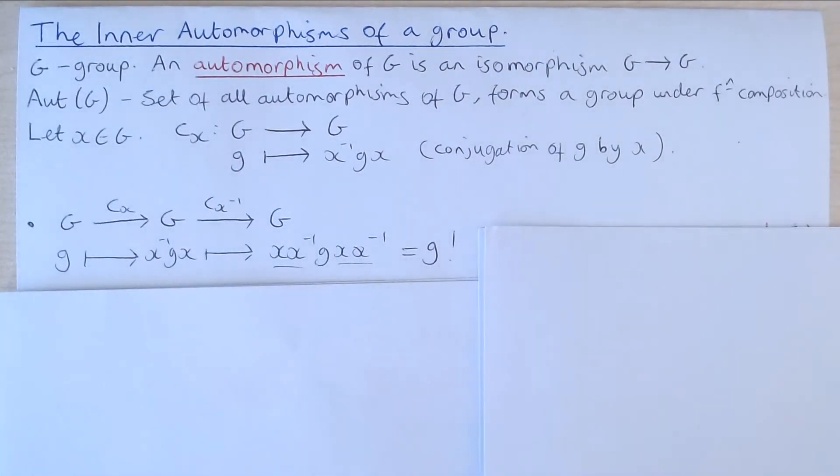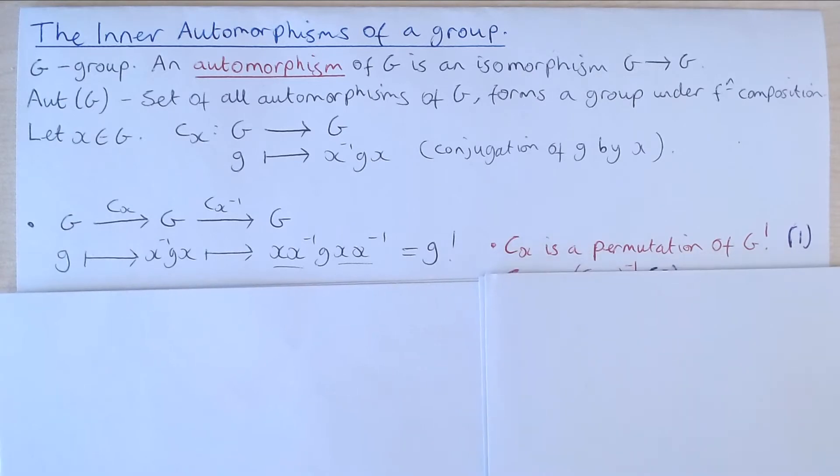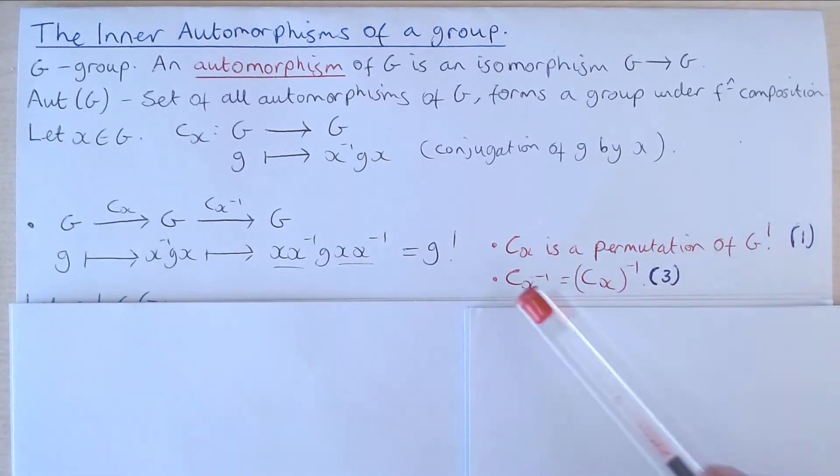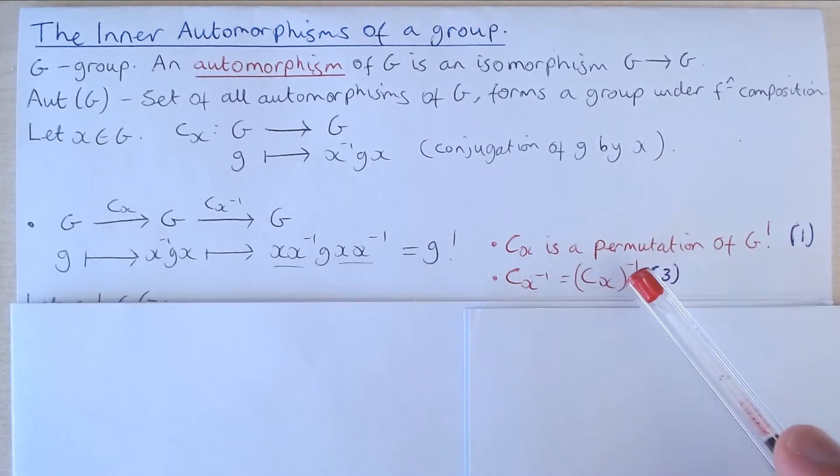So what this says is that this map CX is a permutation of G, just a bijection of G. And we've also shown that in fact C of X inverse is actually the inverse of this map CX.